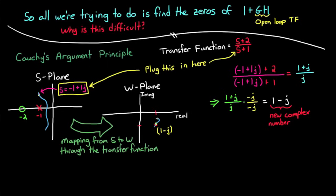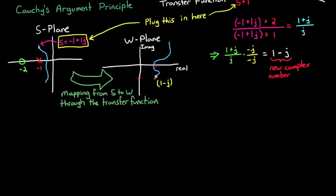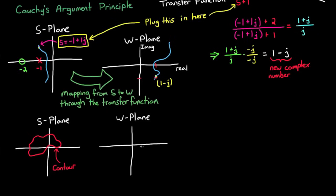And if we plugged in more and more points on the s-plane as to form a continuous line, then this will form a continuous line in the w-plane. And if you draw a continuous line that connects back to itself, we call this a contour. And it will generate some sort of continuous squiggly line over in the w-plane that also connects back up with itself.